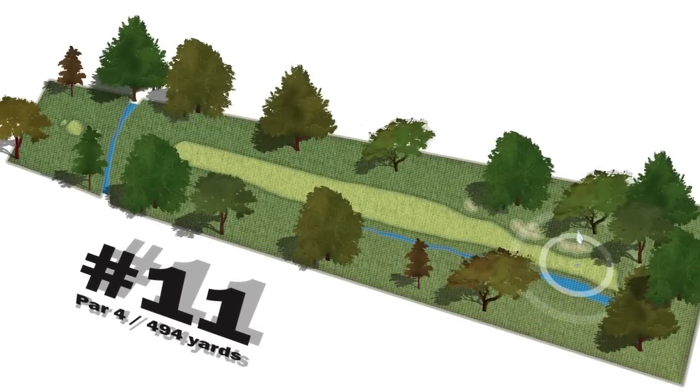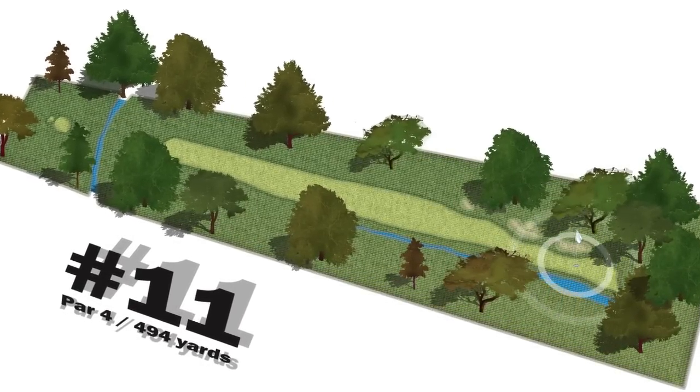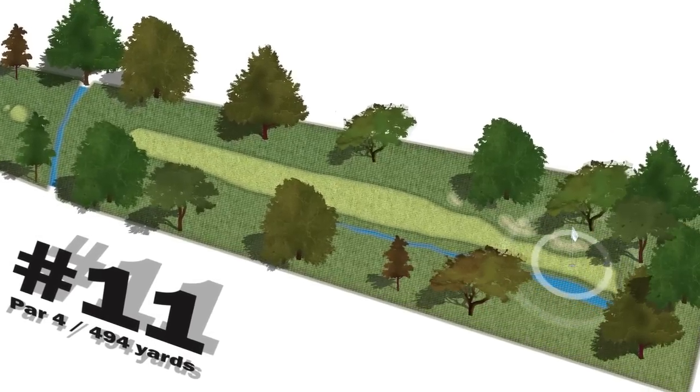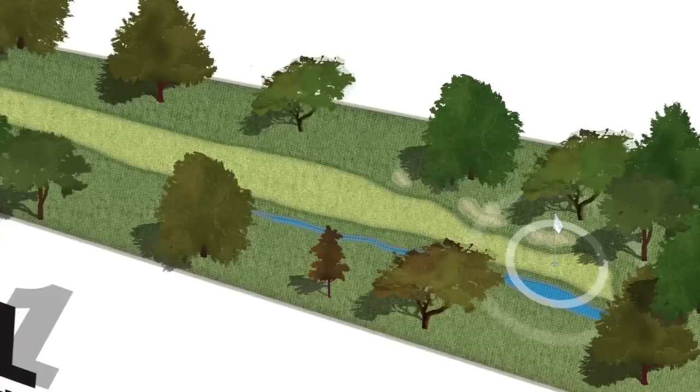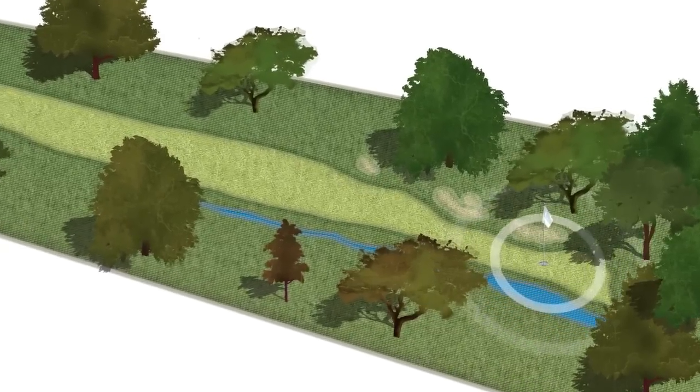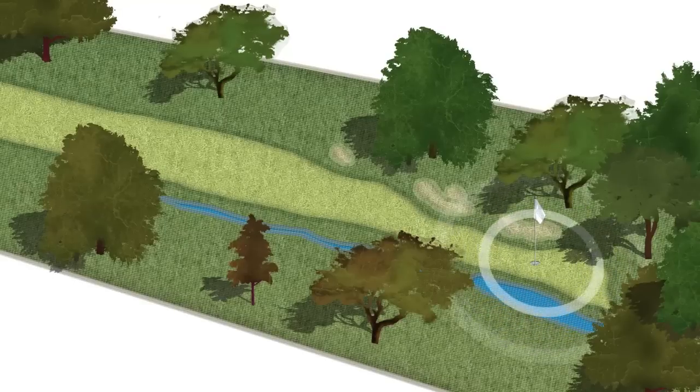Slightly elevated tee, but it's also got a slightly elevated second shot back up to the green. That's guarded by a water feature on the right, and that pond feeds a creek that goes all the way down the right-hand side, and it's well bunkered on the left side of the green as well.